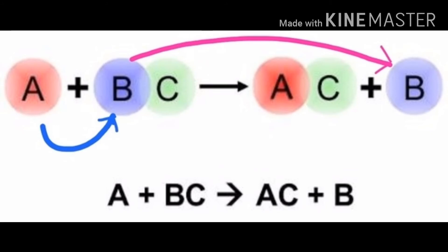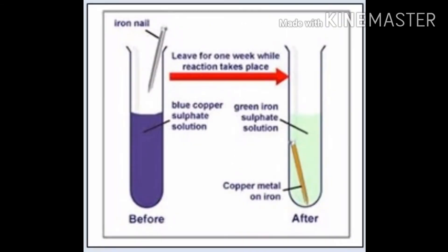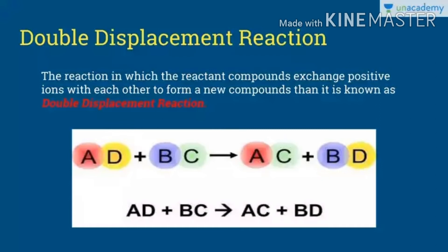Now we will learn the third type of chemical reaction, and that is displacement reaction. Ja chemical reaction madhe less reactive element haa more reactive element kadun displace kela jato, tala displacement reaction ase mantat. In the given example, copper sulfate reacts with iron and ferrous sulfate, and a precipitate of copper is formed. That means more reactive iron displaces less reactive copper from its place.